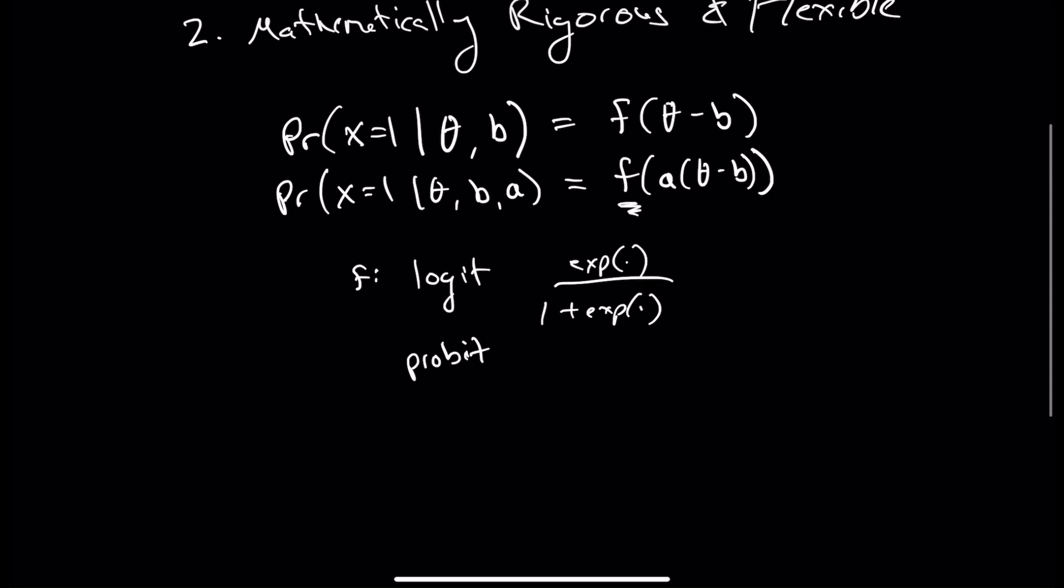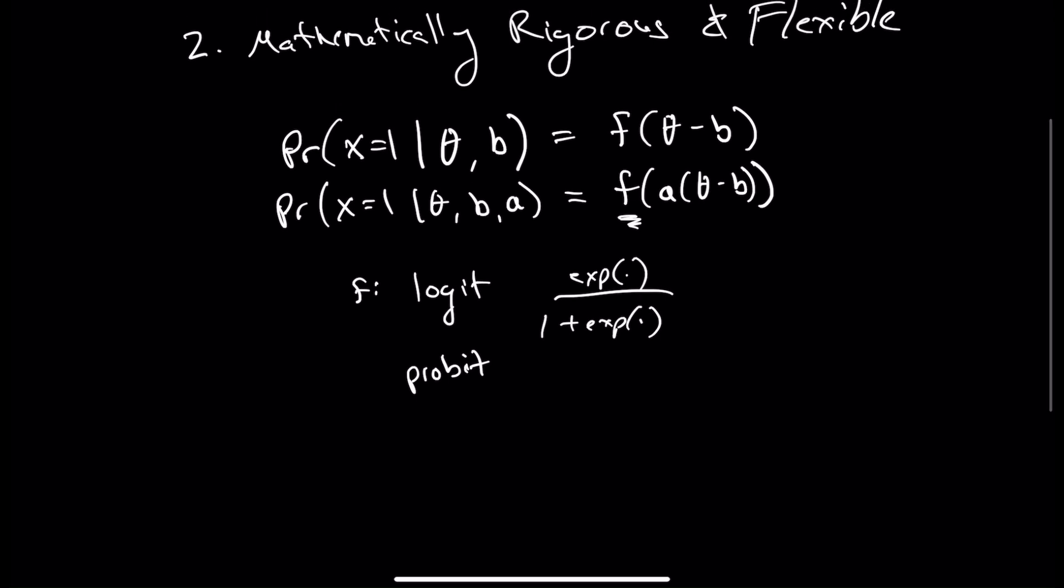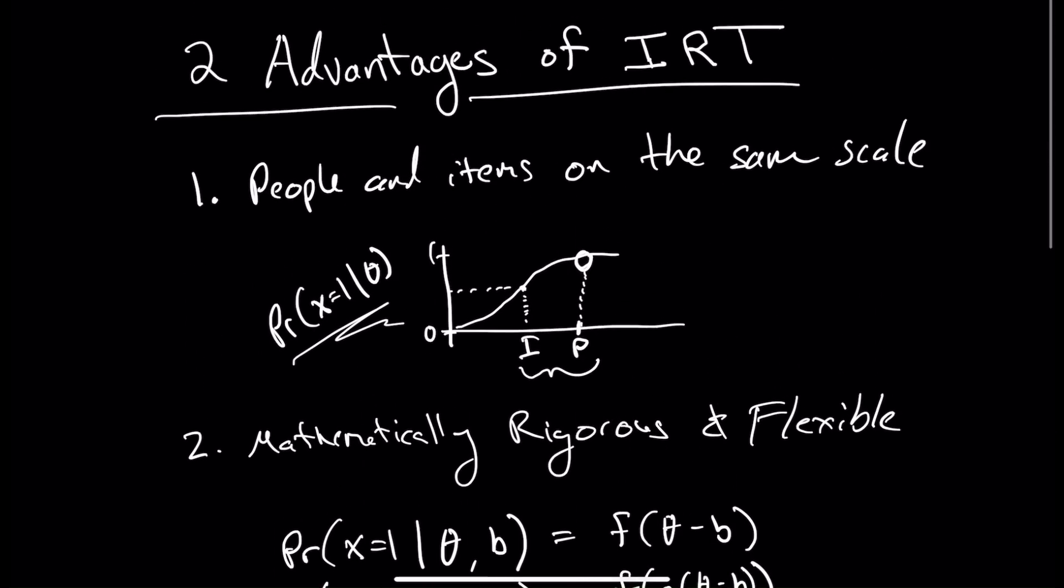So being able to not only mathematically rigorously define our function and our parameters, but we can then also use that to strongly relate items and people. So those are two major advantages of IRT, placing people on the same scale and having a very mathematically rigorous and flexible framework.